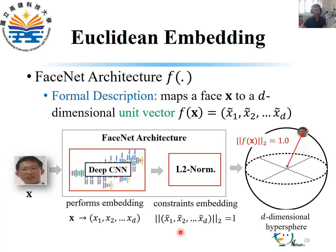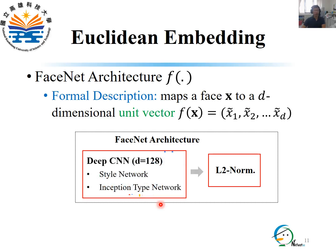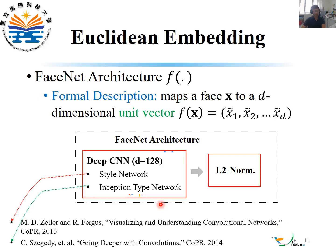The purpose of the L2 normalization step is to make the embedding invariant to lighting variance or affine transformations. The network used in FaceNet for Euclidean embedding can be any type of deep CNN. In this paper, a style network and an inception-type network are used for discussion, with their respective references provided. As discussed in this paper, FaceNet achieves its best performance when d is set to 128.